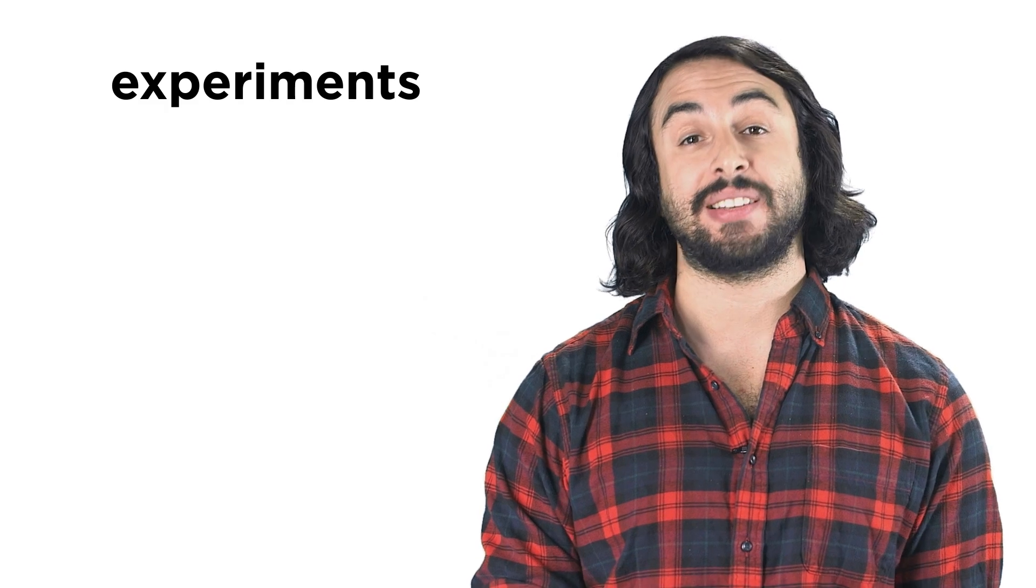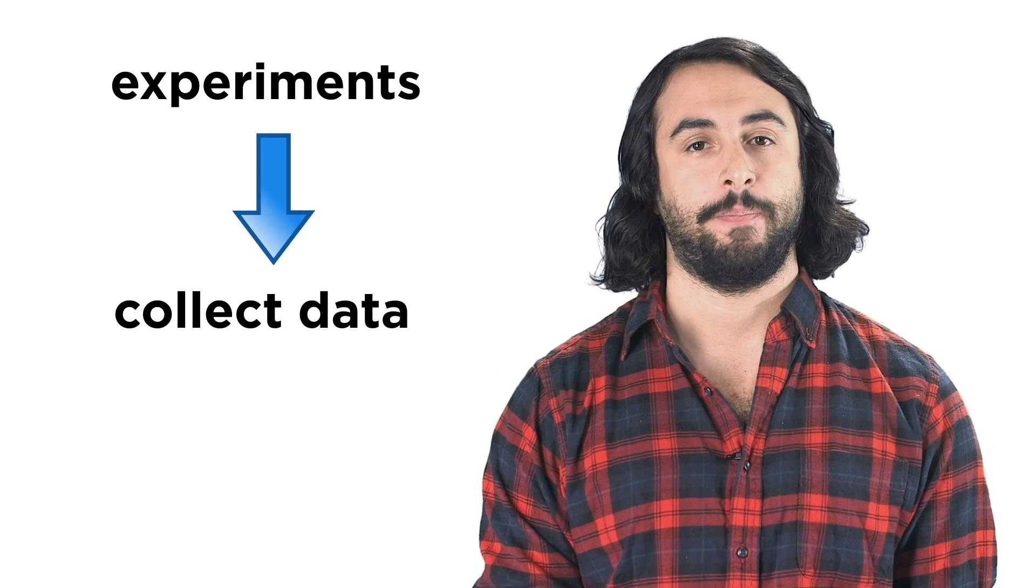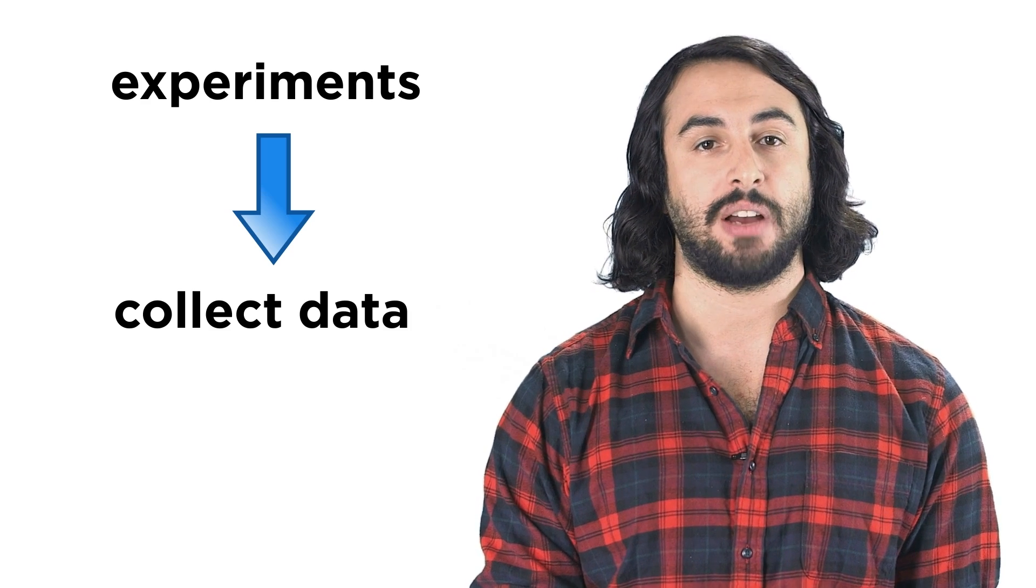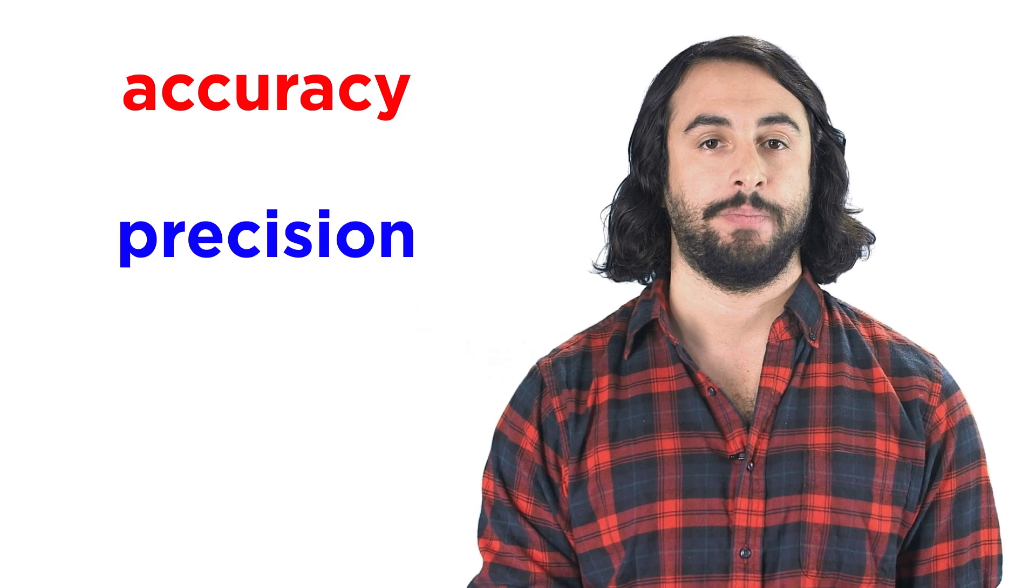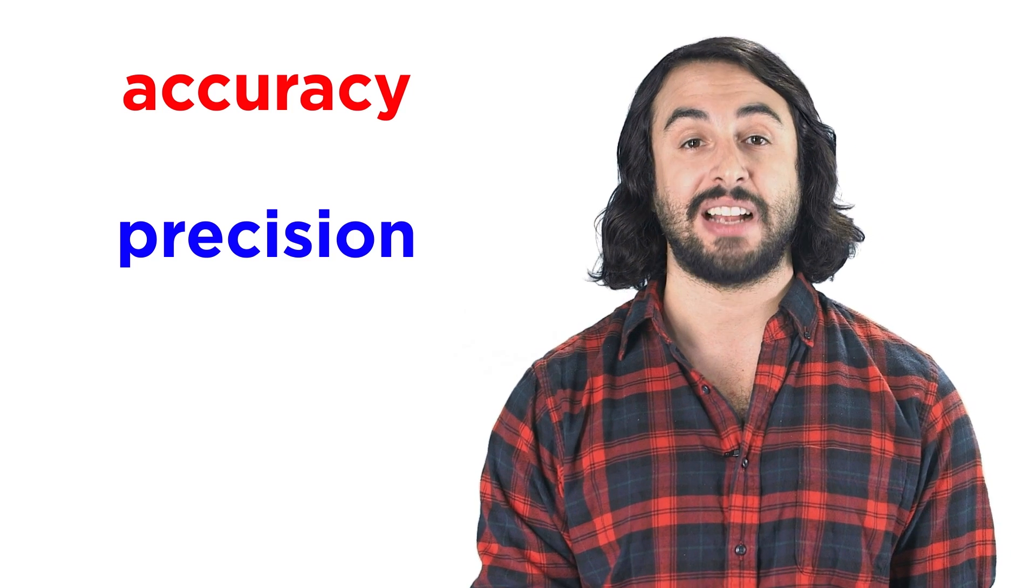To do science, we must do experiments. And in doing experiments, we must collect data. If this data is quantitative, we will need to understand the concepts of accuracy and precision in order to properly analyze the data. So let's define these terms and discuss how they apply to sets of numbers.